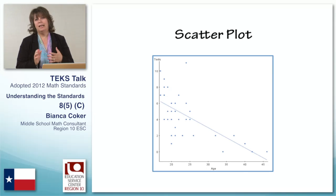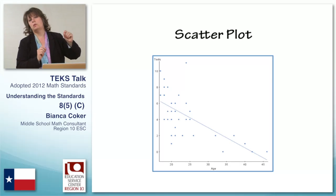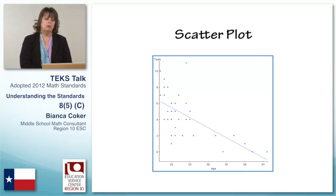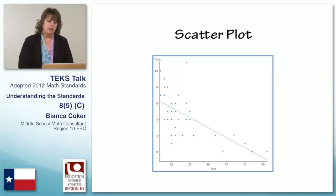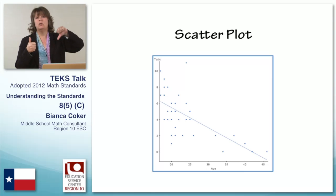Now remember, trend line and line of best fit are two different things. You can find a trend line just by eyeballing the data and seeing which way you think it's going. A line of best fit has to be calculated very specifically, and we're not required to do that this time. So looking at this trend line, what kinds of things we can say are that the two variables have a negative correlation. In other words, as one variable increases, the other variable decreases — that's a negative correlation.